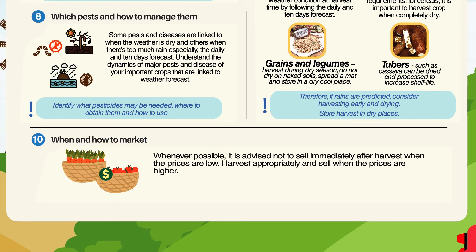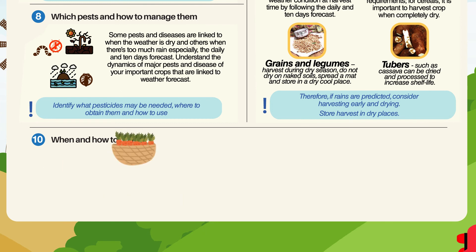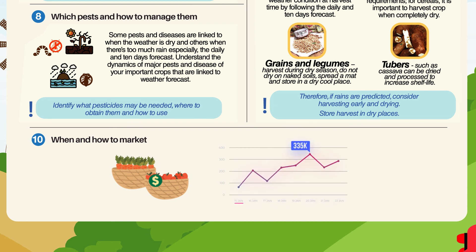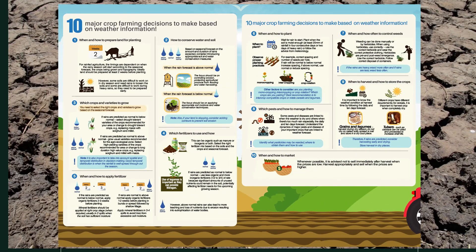When and How to Market: Whenever possible, it is advised not to sell immediately after harvest when prices are low. Harvest appropriately and sell when prices are higher. Study and keep in mind these 10 suggestions and you will be able to mitigate and control the effects of climate change.